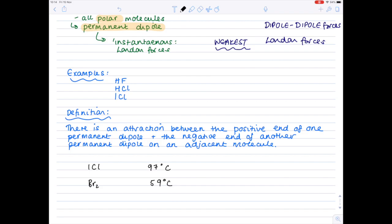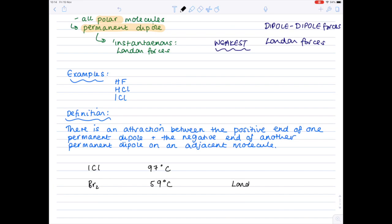Why is that? Because in bromine, you've just got London forces, but with the iodine chloride, we have both the London forces and the dipole-dipole forces. So notice that it's possible to have both types of forces. Why does iodine chloride have the dipole-dipole forces, whereas the bromine molecule doesn't? Well, it's because it's polar.